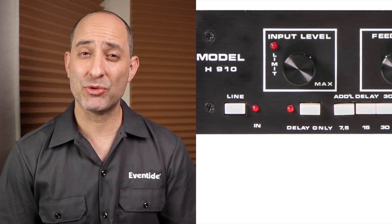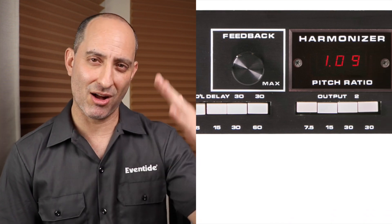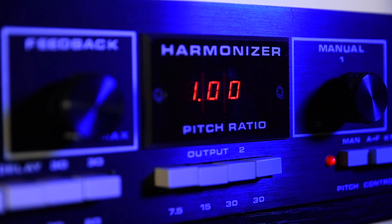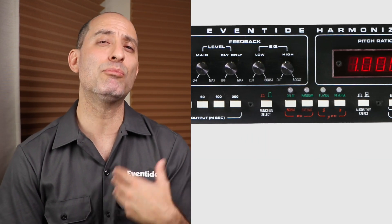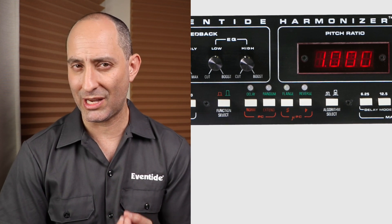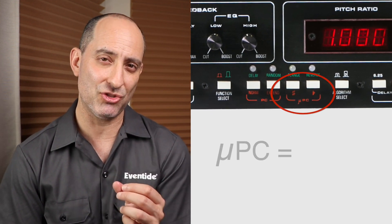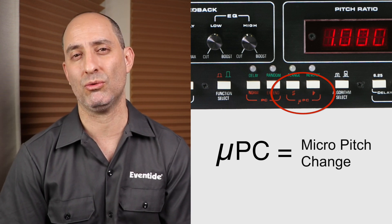The H910 was a processor with a somewhat unstable clock that caused it to flicker between two pitch ratios. As a result, in the studio, engineers combined two of these units to achieve a rich stereo spread effect. Its successor, the H949 Harmonizer, not only improved its clocking but employed new techniques to achieve small, precise deviations in pitch, cementing micro pitch shifting as a useful production tool.